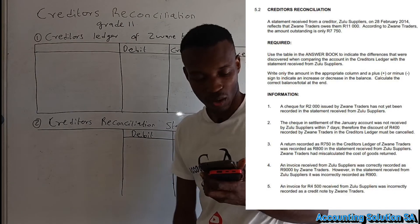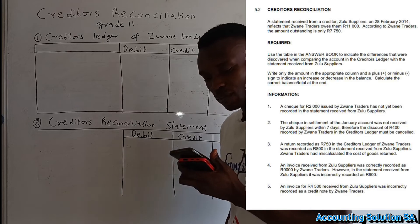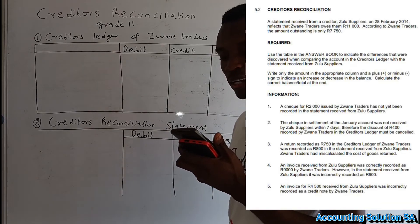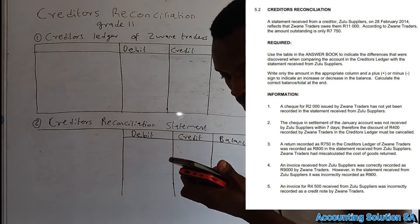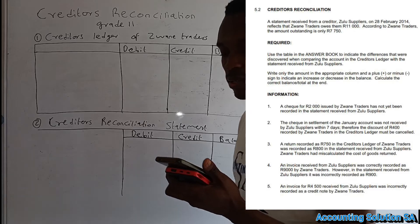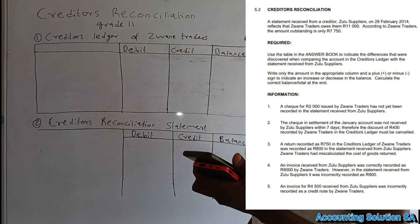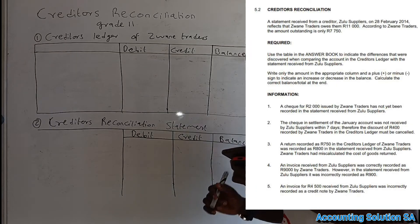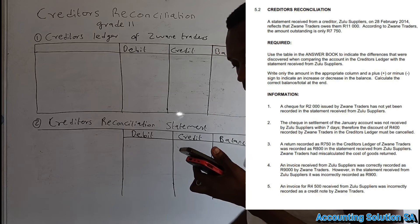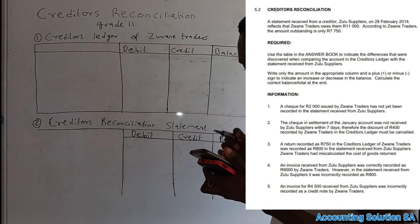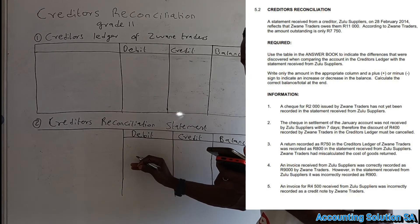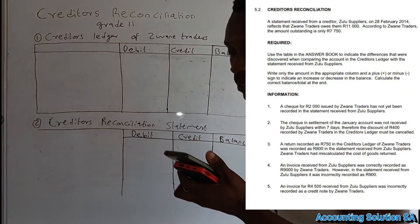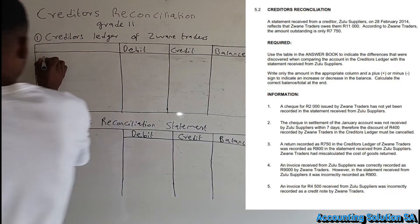The question paper is from 2021. It says that the statement received from a creditor, Zulu Supplier, on 28 February reflects that Zwane Trader owes them 11,000. According to Zwane Trader, the amount outstanding is only 7,750. We are going to prepare these two documents.